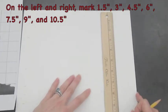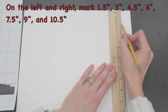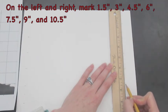Now you know you need to repeat the process on the right side. Once again, your measurements are 1 and a half, 3, 4 and a half, 6, 7 and a half, 9, and 10 and a half.